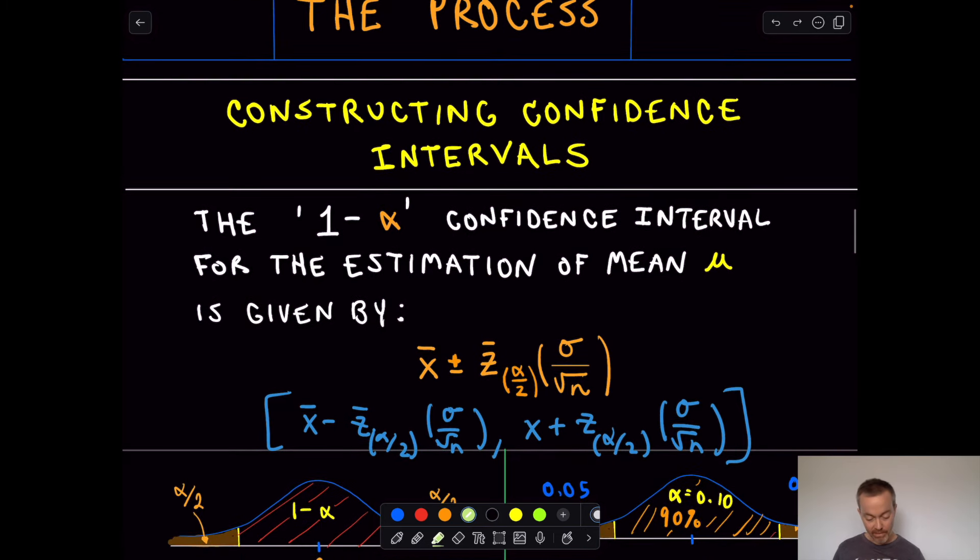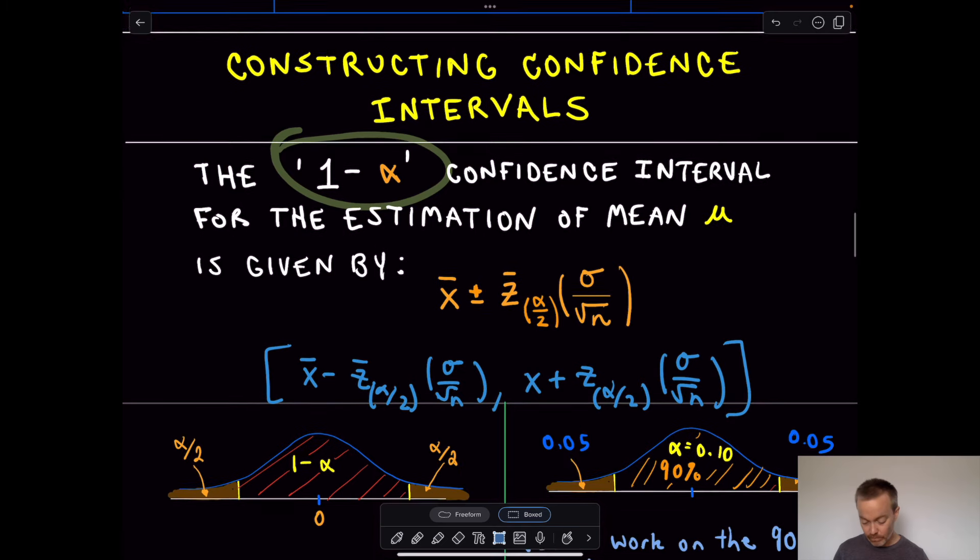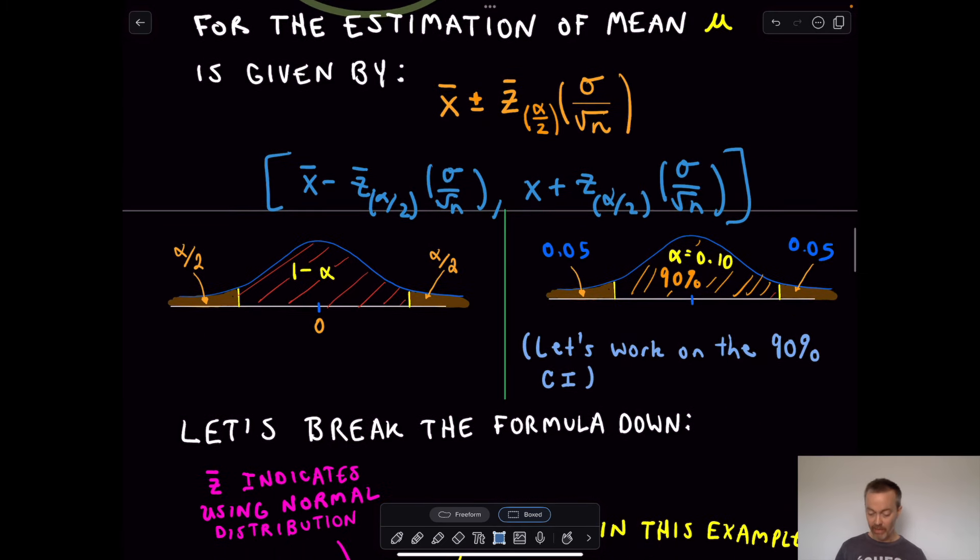Okay. So here's our process. The main idea is we're going to compute this, what's known as a 1 minus alpha confidence interval. And what we're going to produce, or what we're going to have to fill in is this little formula here. And we'll talk about this a little bit more here in just a second. Notice I've got that plus minus in the middle. You can break that up into an interval. We'll just take x̄ minus and then the x̄ plus, as you can see right below.